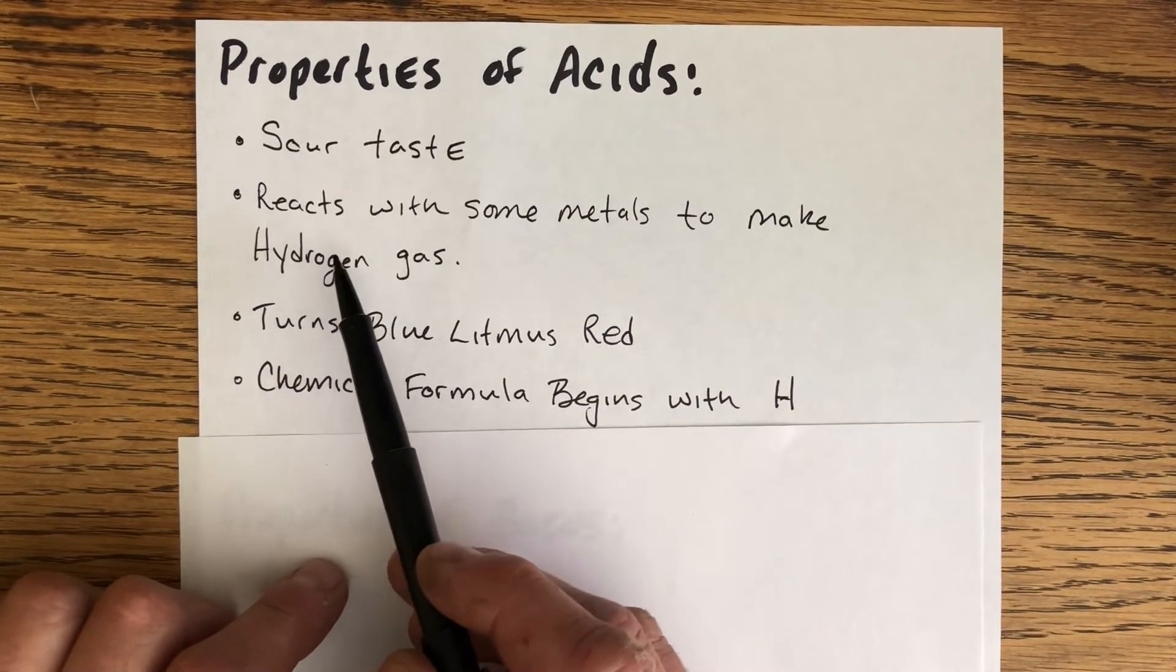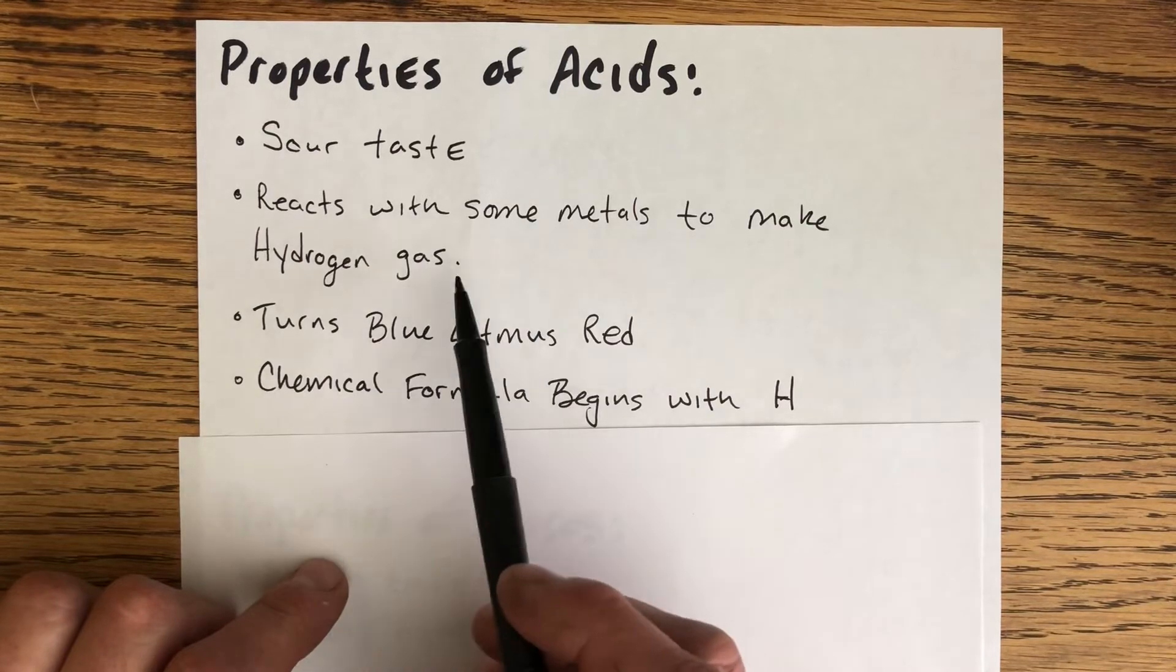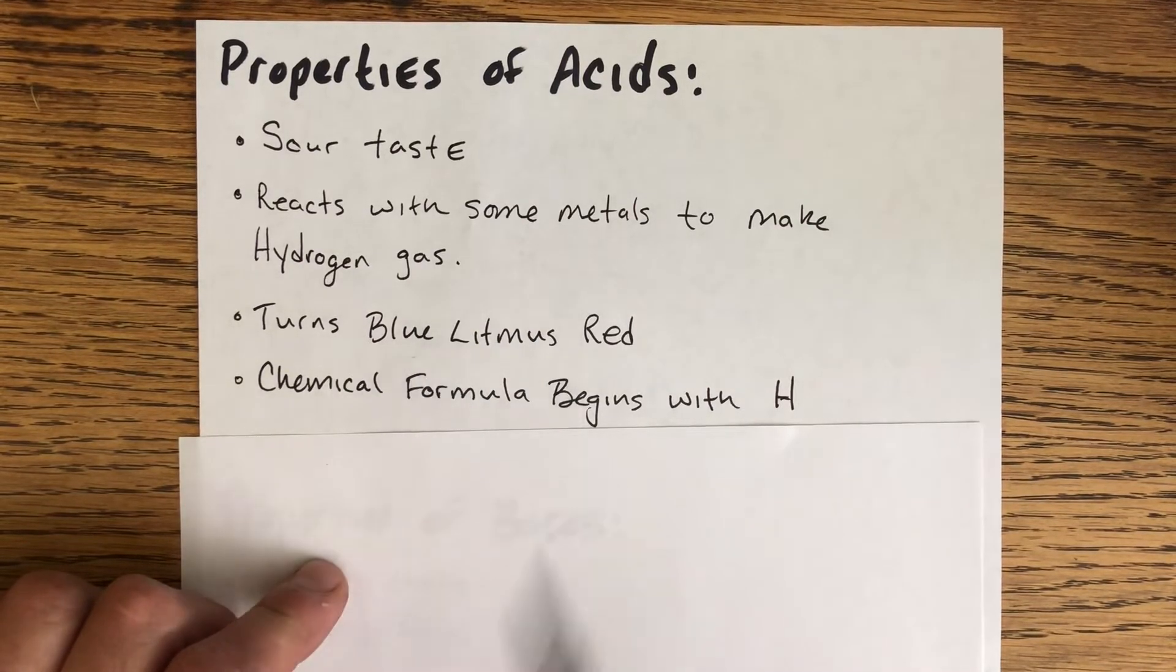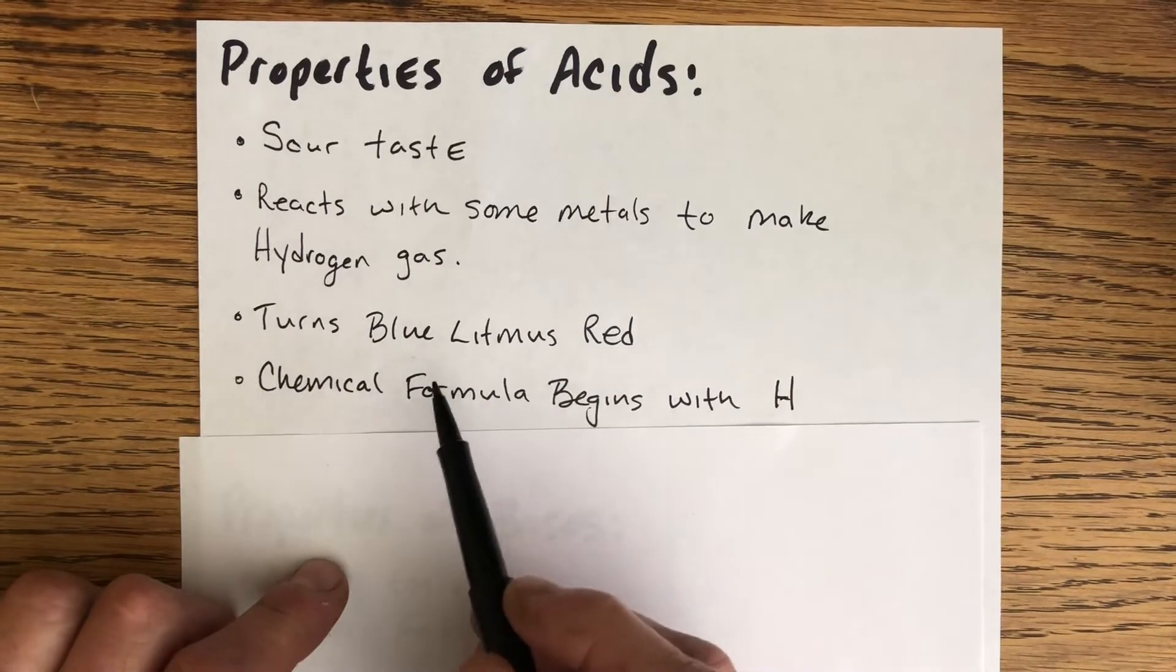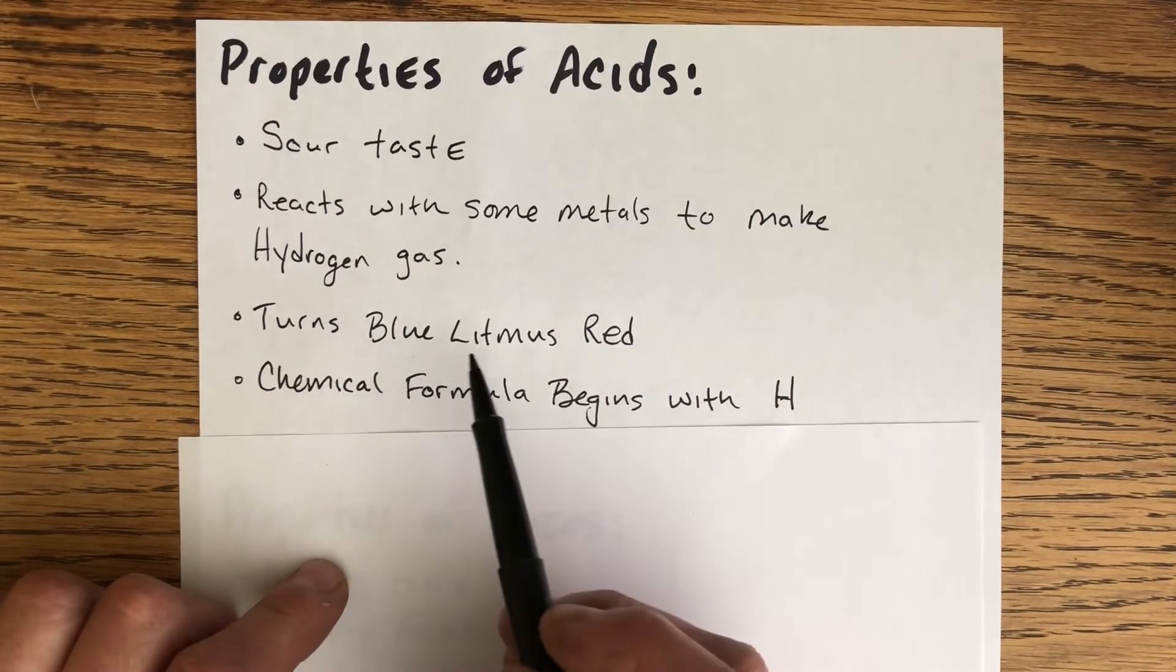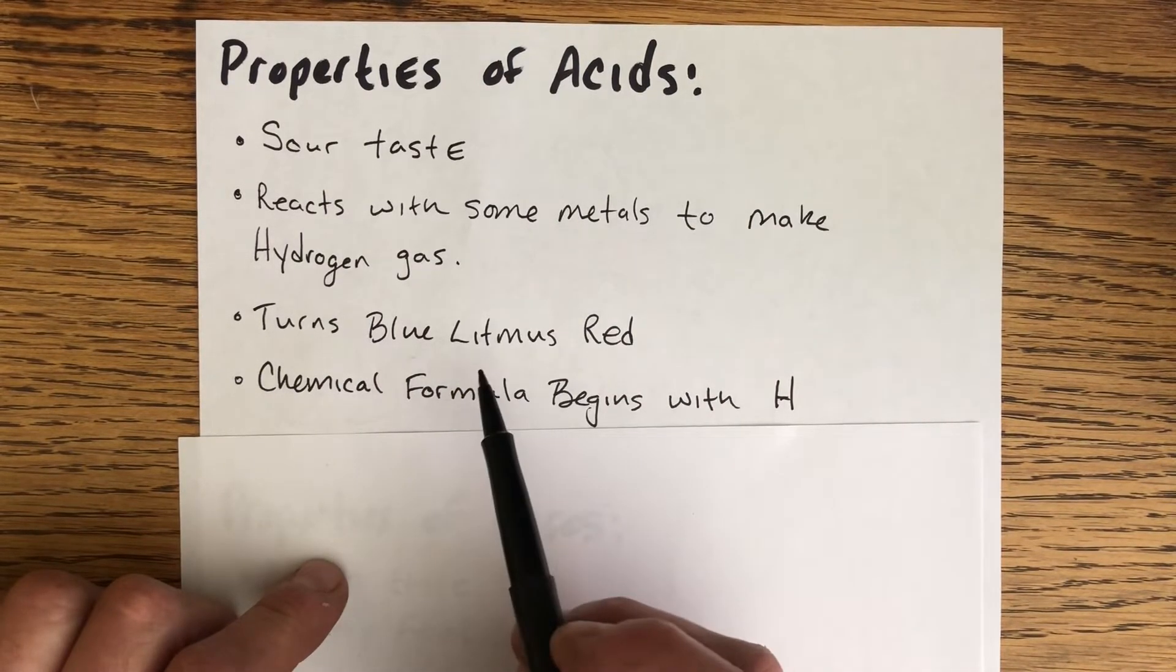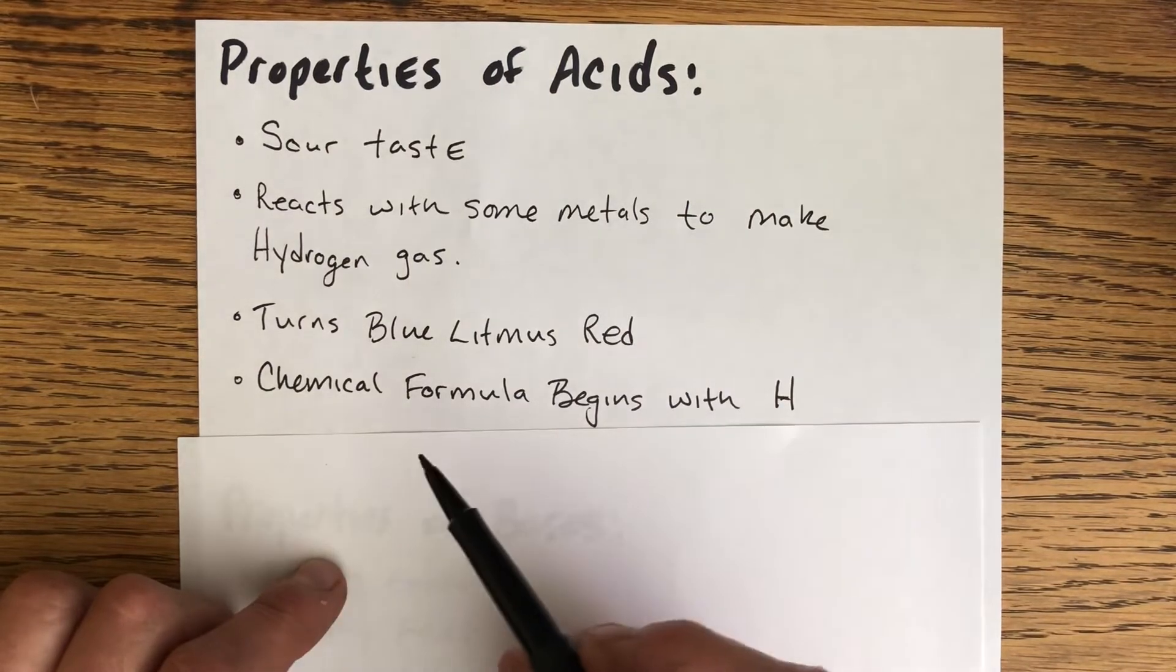We've actually reacted certain metals with acids to make hydrogen gas before, like hydrochloric acid with zinc would make hydrogen gas. There's an indicator, and we'll talk more about indicators as we go on in this unit, but one indicator is known as litmus paper.